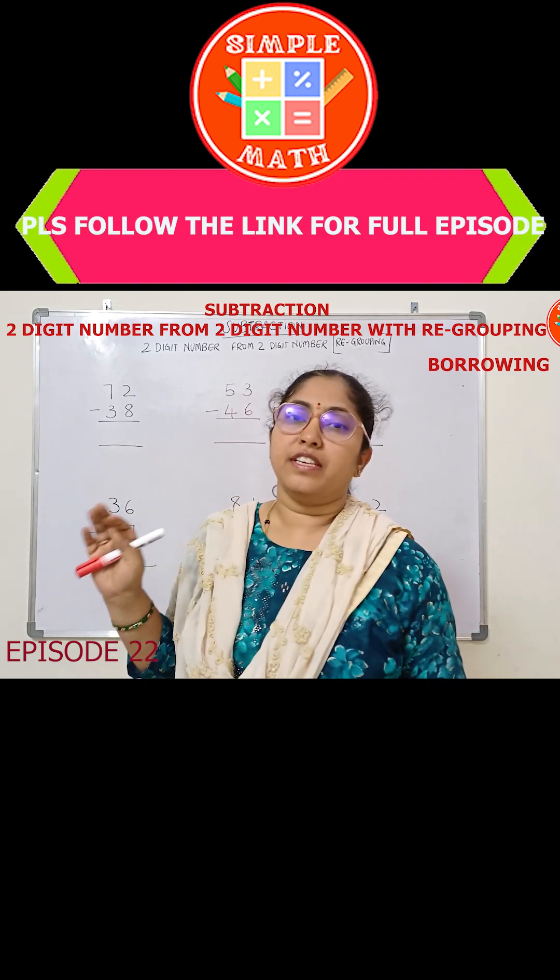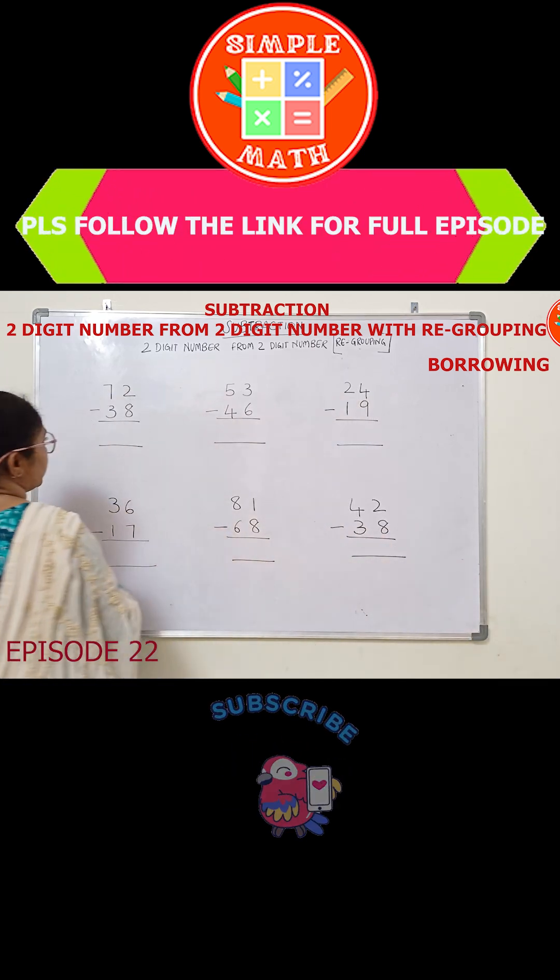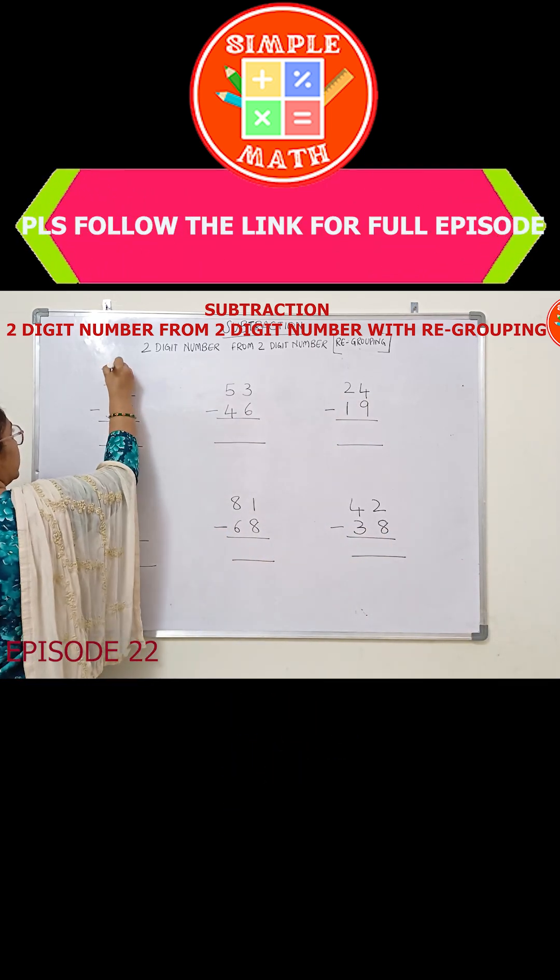Now we all know that we start subtraction from ones column. So let's start marking ones column and tens column with the first sum. This is ones column, this is tens column.